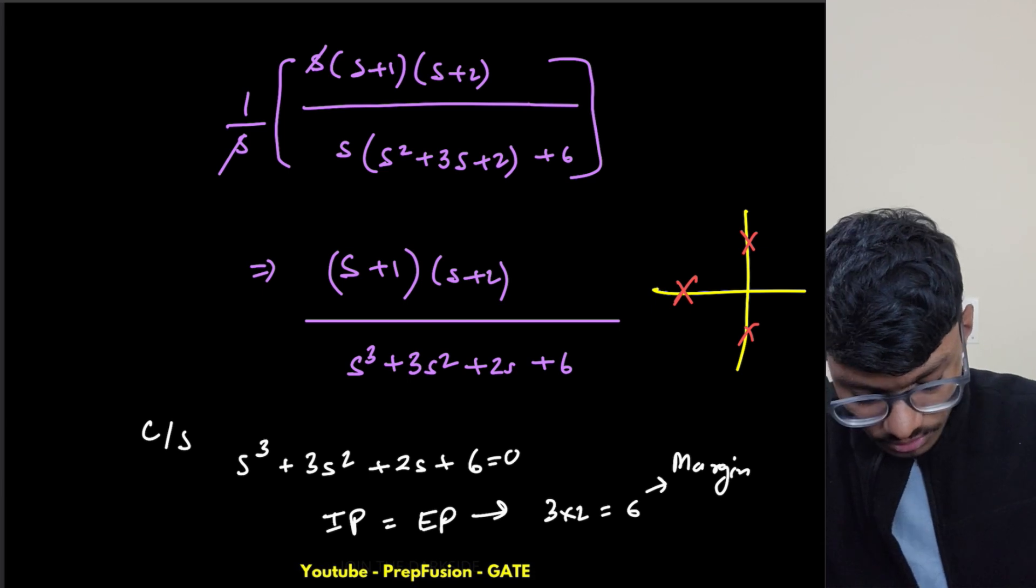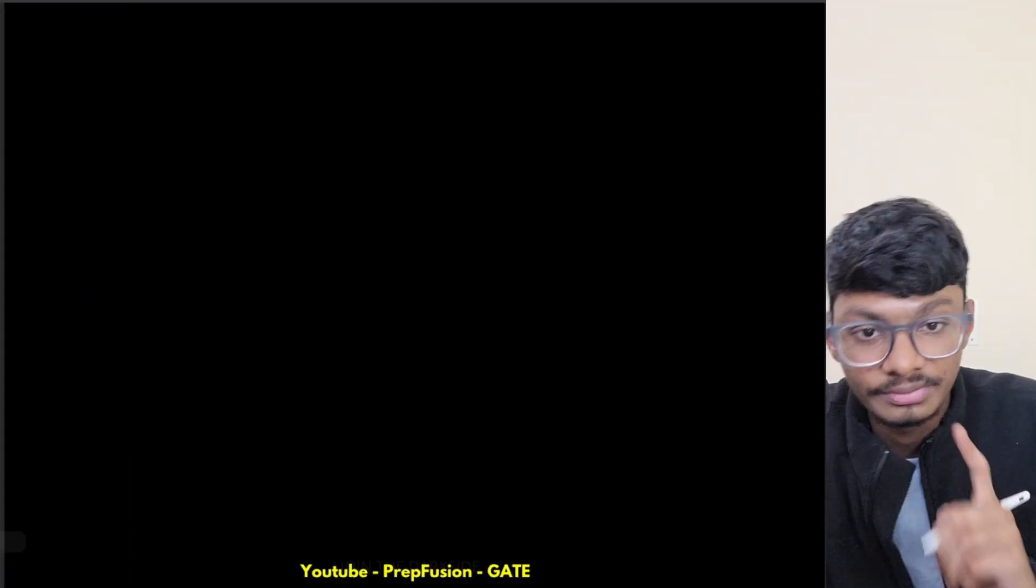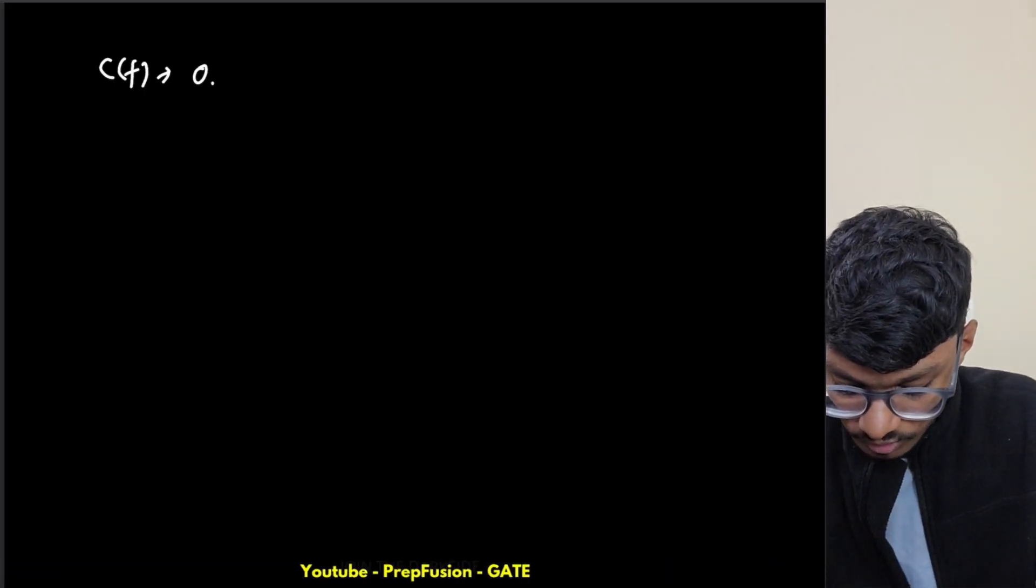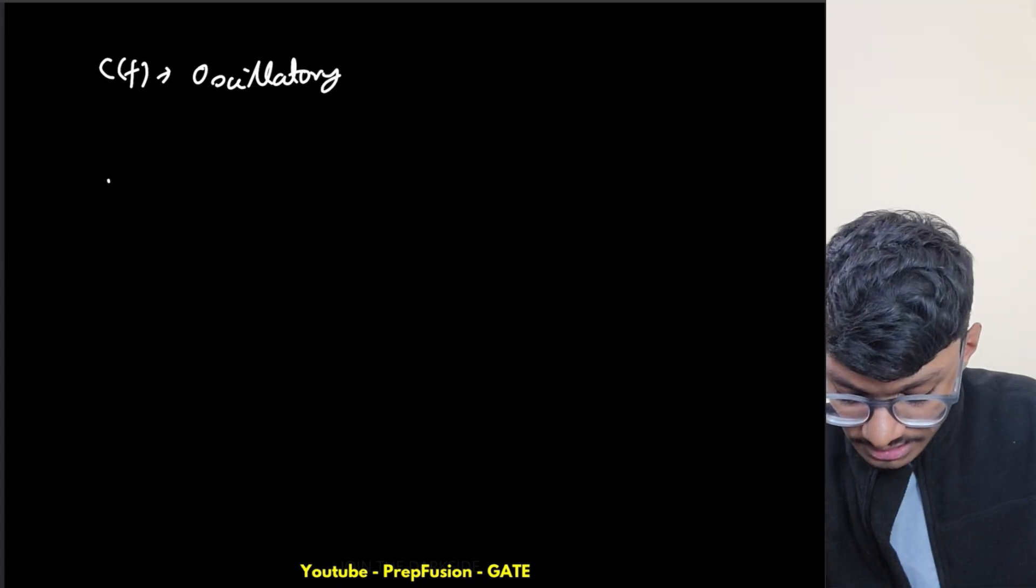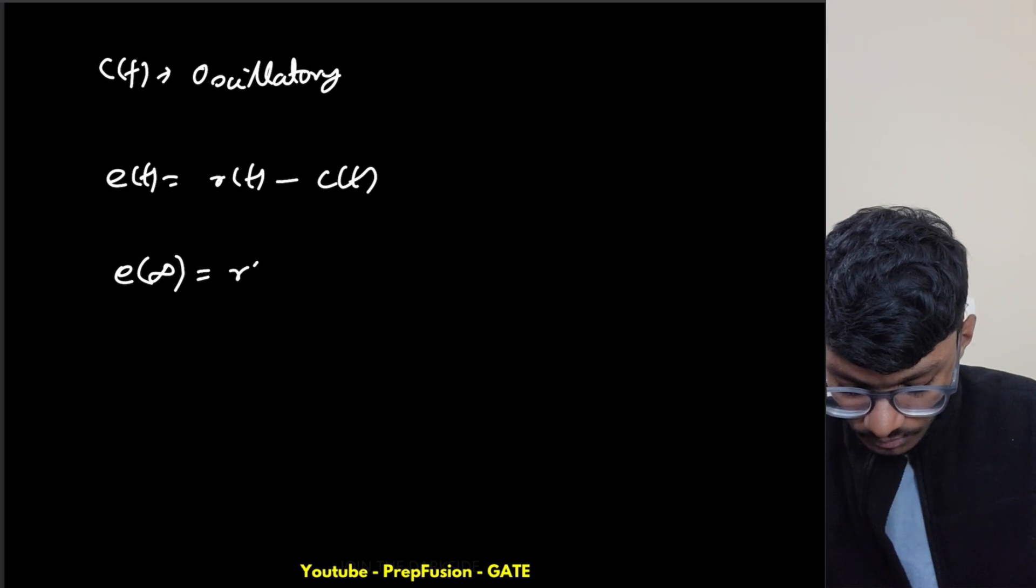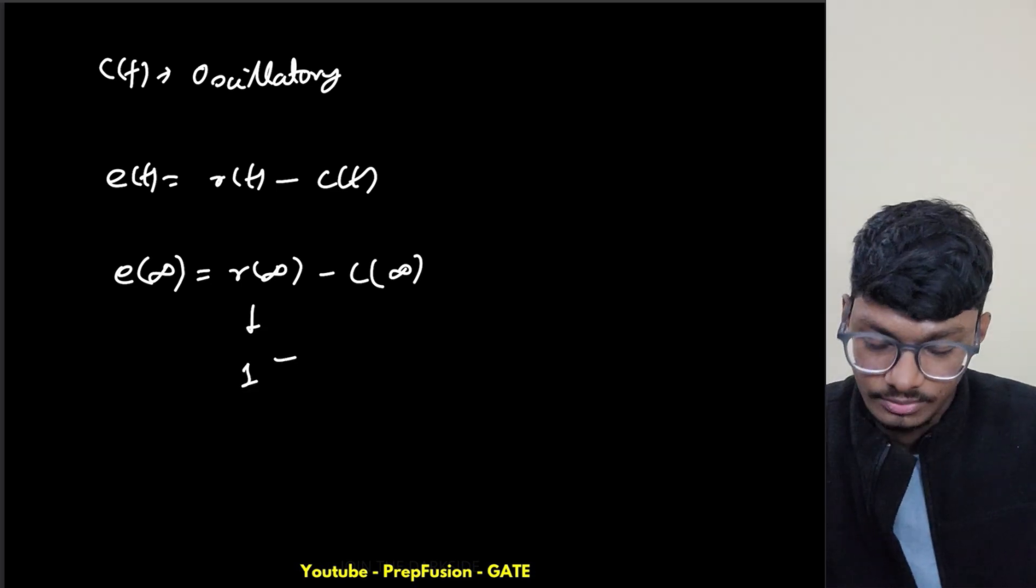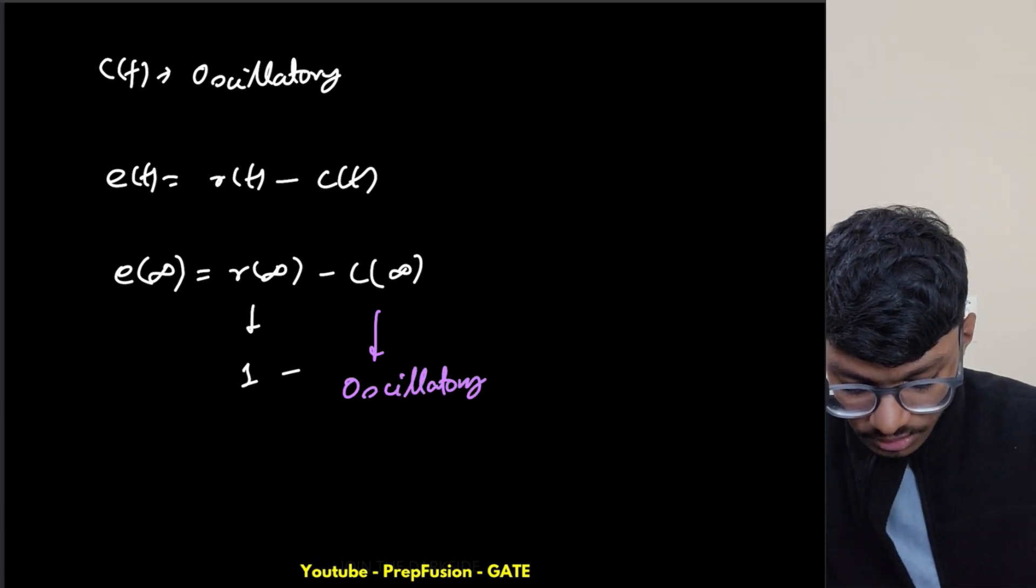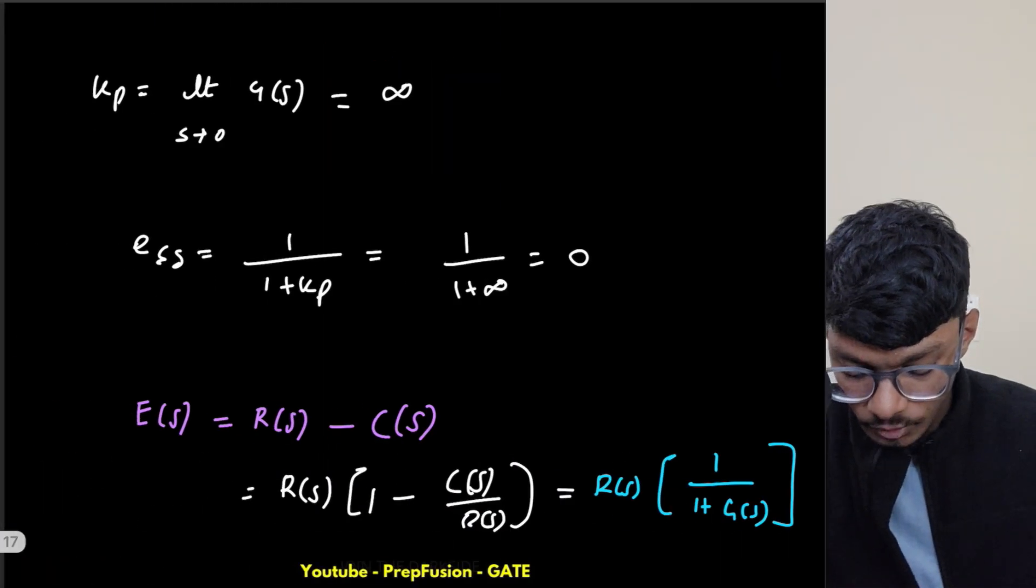So as my response is marginally stable, I cannot simply apply the final value theorem. My response will be oscillatory. My c(t) will be oscillatory. Now, as c(t) is oscillatory, what is e(t)? E(t) is r(t) minus c(t). What is e(∞)? It is r(∞) minus c(∞). This is constant, one unit step only, but this is oscillatory. So one minus something oscillatory will also be oscillatory. E(∞) will be oscillatory.